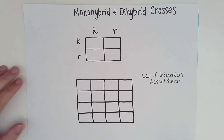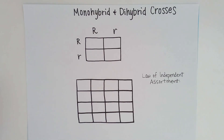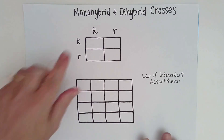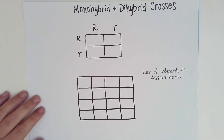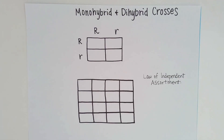Welcome to this video. This is part three of basic genetics, and I want to make sure you know the difference between a monohybrid and a dihybrid cross. This will come up if you take a test like the TEAS test to get into nursing school, and it will also come up on a general biology basic genetics question your teacher might give you.